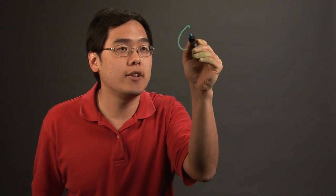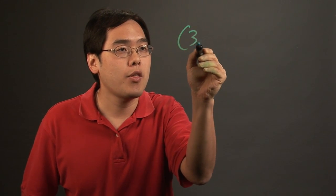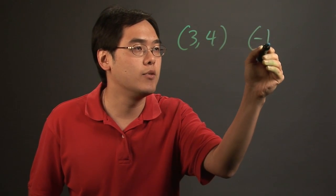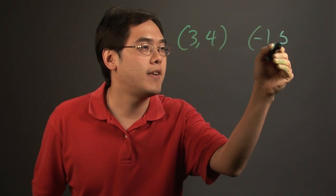Here's a basic tutorial on how to multiply coordinates. Now, if you have, let's just say, (3, 4), and you're multiplying by (-1, 5),